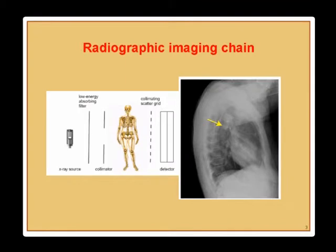Typically a radiographic imaging chain starts with an x-ray source, then a low-energy absorbing filter, because low energies basically just add to patient dose without adding image information. So we use aluminum filters to reduce patient dose. Then there is collimation, an anti-scatter grid, and then a detector. People are used to screen-film systems in radiology, which are the traditional systems where you have a scintillator that converts x-ray photons to light photons, which then expose film.